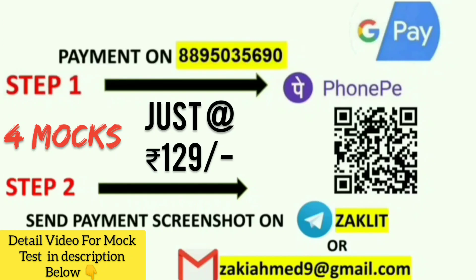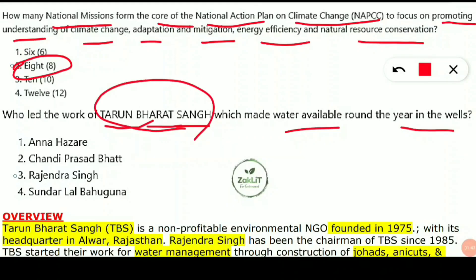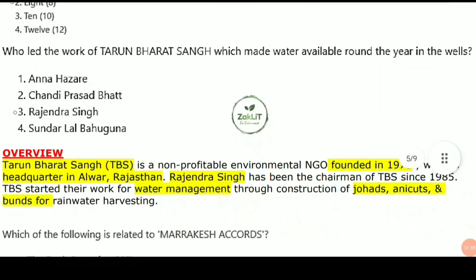The next question asks: who led the work of Tarun Bharat Sangh, which made water available round the year in the villages? Tarun Bharat Sangh (TBS) is an organization — note it is 'Sangh,' not 'Singh.' The answer is Rajendra Singh, who led this organization and was instrumental in water availability efforts.